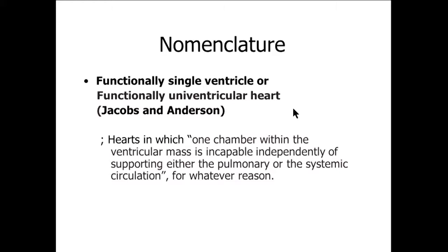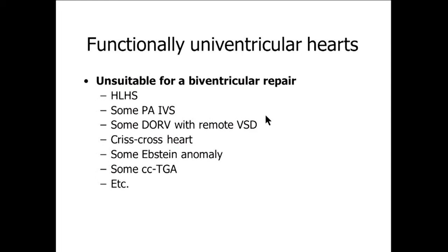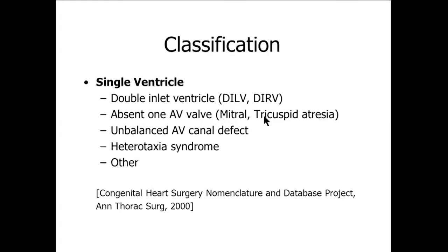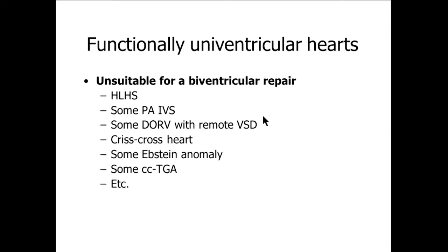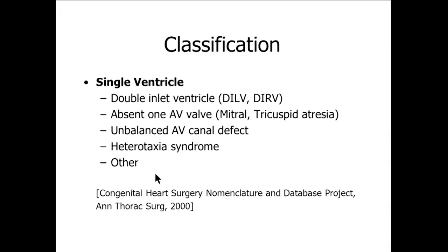Functionally single ventricle or functionally univentricular heart has been proposed. This term means hearts in which one chamber within the ventricular mass is incapable of independently supporting either pulmonary or systemic circulation for whatever reason. Broadly, functionally univentricular hearts include hypoplastic left heart syndrome, pulmonary atresia with intact ventricular septum, some forms of DORV, crisscross heart, some subset of Ebstein anomaly or CCTGA, et cetera.